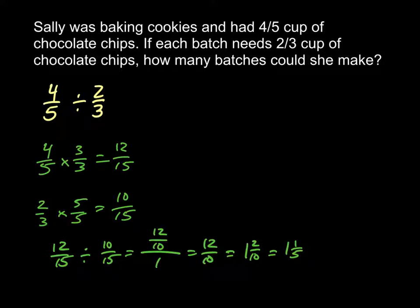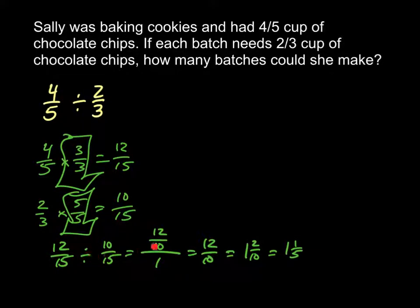If you did it with common denominators, it might look something like this, where you take it and multiply the first part to get a common denominator, and then multiply the second part to get a common denominator. And then you're able to just work it across, in which you get 1 and 1 fifth.